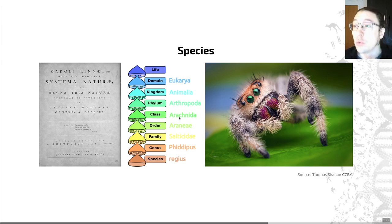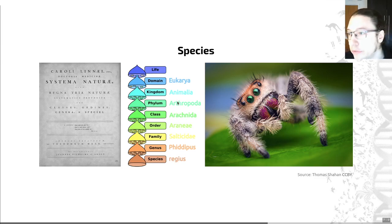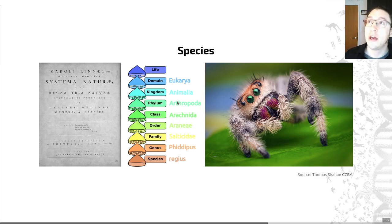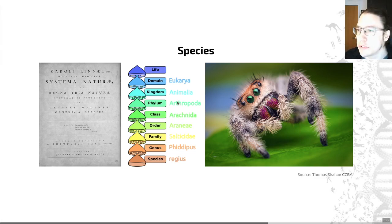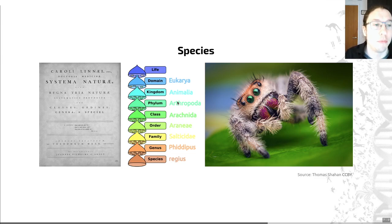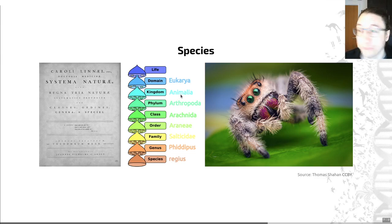Arachnids are just one example of a phylum called the Arthropods. Other members of this phylum include the insects, the millipedes and centipedes, and the crustaceans — crabs, lobsters, woodlice and creatures like that. All of those are examples of groupings within the phylum Arthropoda, and all of those are themselves Animalia — animals. Animals are just one example of a group called the eukaryotes.